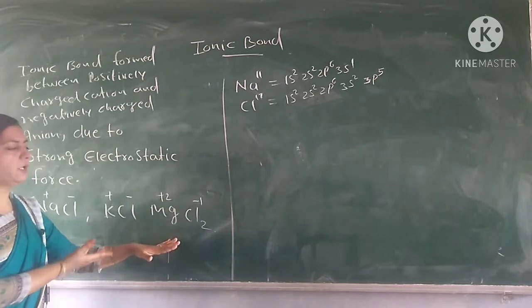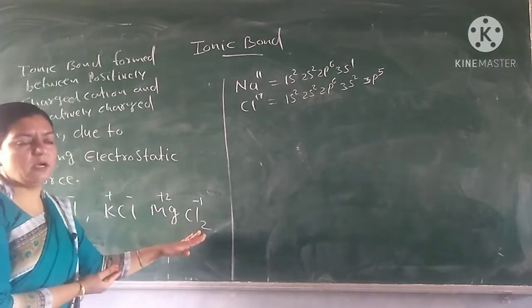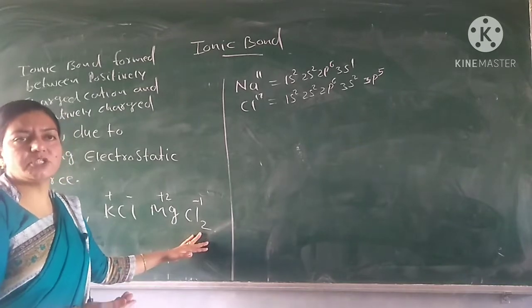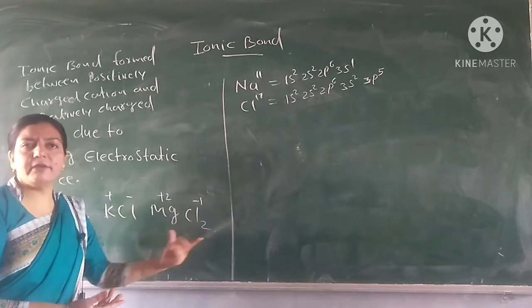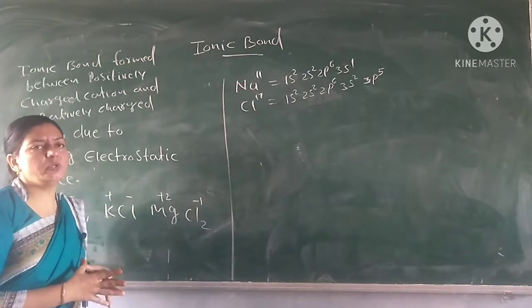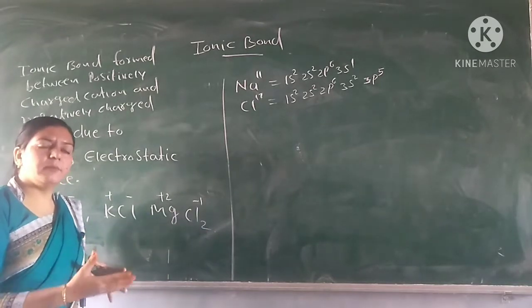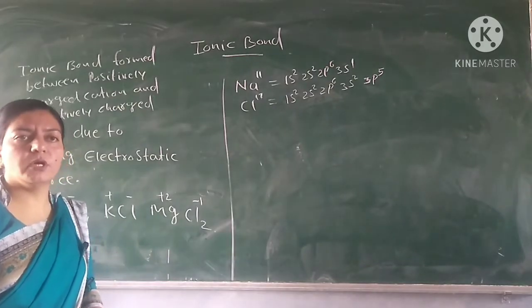In ionic bonding, metals become positively charged and nonmetals like chlorine become negatively charged. When you see a compound, you can determine if it has an ionic bond or a covalent bond.